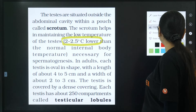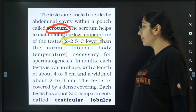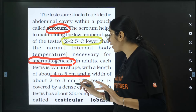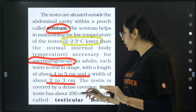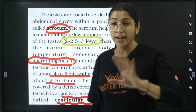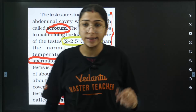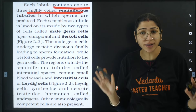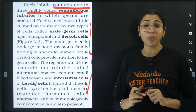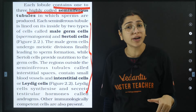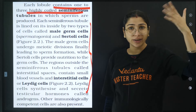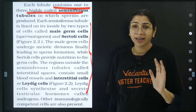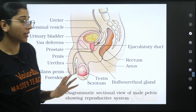The temperature inside the scrotum is 2 to 2.5 degrees Celsius lower than normal body temperature, and this temperature helps in the formation of sperms - that is spermatogenesis. Each testis has about 250 compartments called testicular lobules, and each lobule has 1 to 3 highly coiled seminiferous tubules. On the inner lining: male germ cells and Sertoli cells. On the outer side: interstitial cells present in interstitial spaces, which release testosterone.